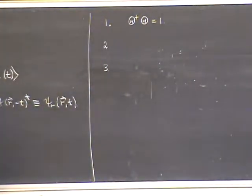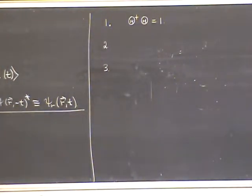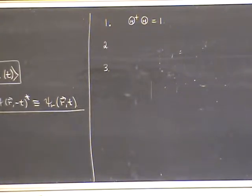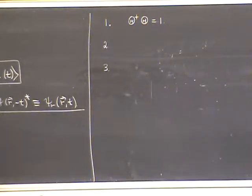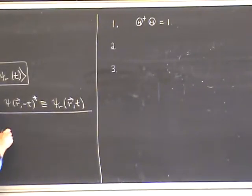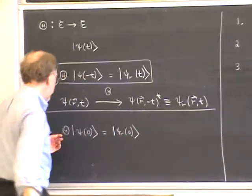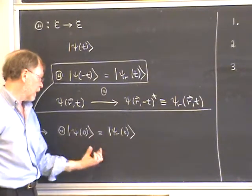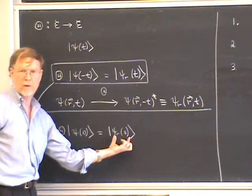Let me go back to the definition of the time-reversed state. If we evaluate this equation at t = 0, it becomes very simply: theta acting on the original state at time 0 equals the time-reversed state at time 0. In other words, the time-reversal operator maps the initial conditions of the original state into the initial conditions of the time-reversed state.